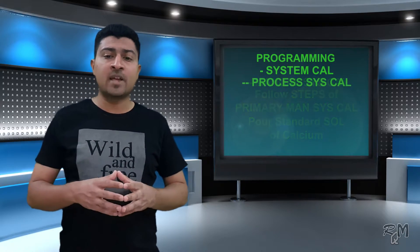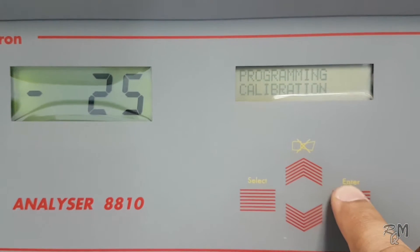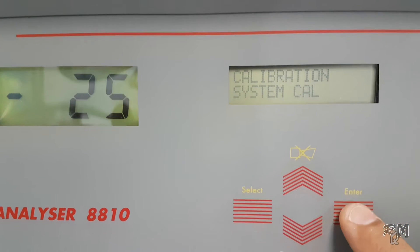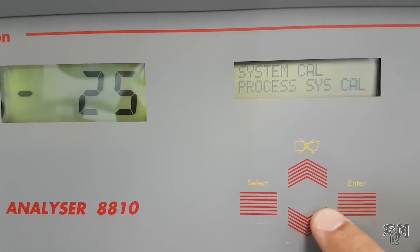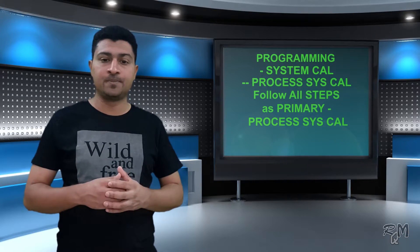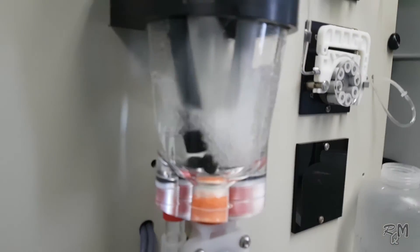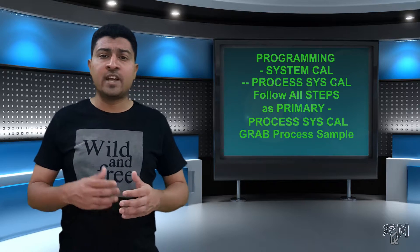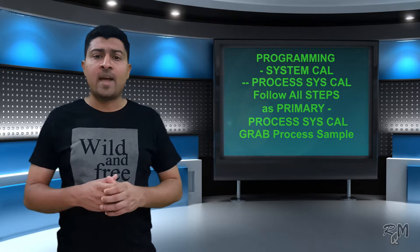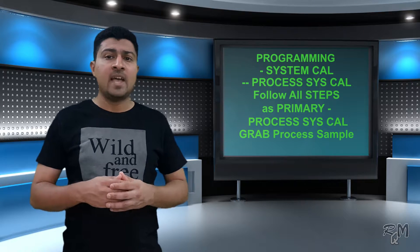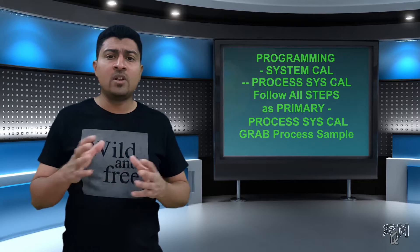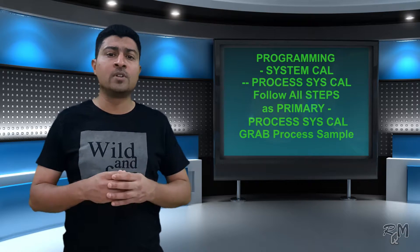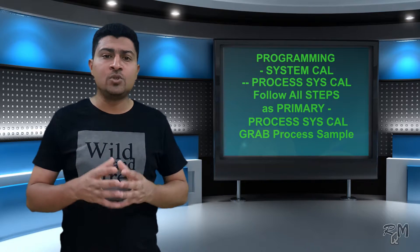Now we will select process system calibration from the system calibration menu. For process system calibration, follow all steps as we did for process calibration in the primary calibration menu. After startup of the calibration process, it is better to switch the unit from milligrams per liter to millivolts to understand the behavior of the electrodes. The analyzer will perform all basic steps like draining and rinsing, after which it will grab the process sample as the standard solution for calibration. Observe the millivolt behavior during titration, because it is extremely important. I will skip some parts of the titration — if you want to know the details, please watch the third part of this analyzer.